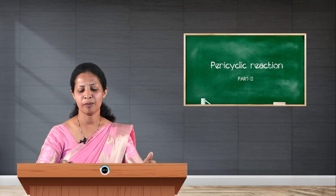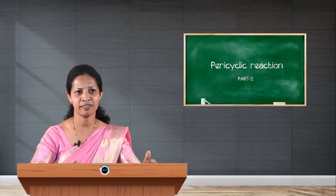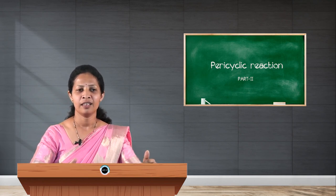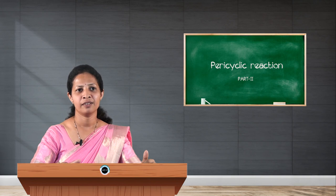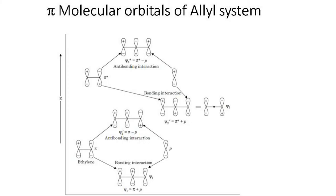Next, we move to the molecular orbitals of conjugated ions or radicals. In conjugated ions or radicals, there are an odd number of carbon atoms. The simplest system is the allyl system. In the allyl system, the molecular orbitals are constructed by the combination of an isolated p orbital and an ethylene molecule. There are 3 molecular orbitals: psi 1 is the bonding molecular orbital, psi 2 is the non-bonding molecular orbital, and psi 3 is the anti-bonding molecular orbital.